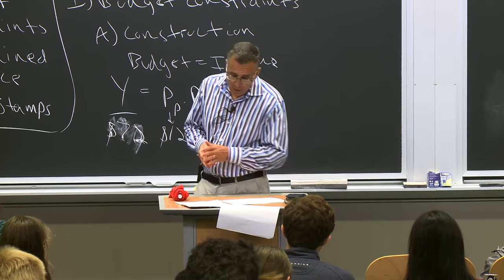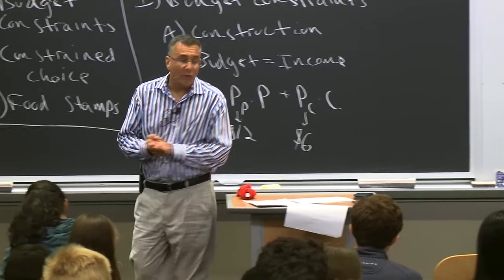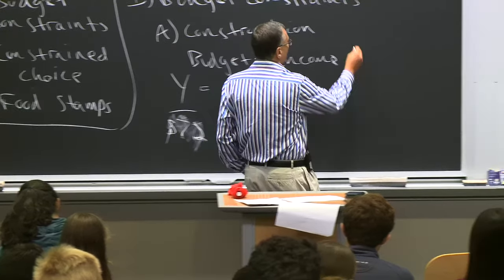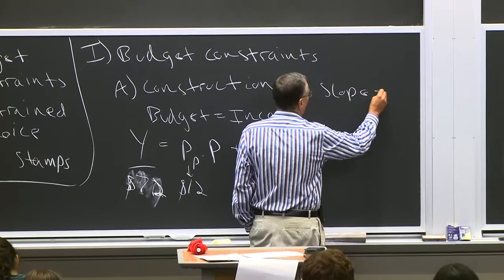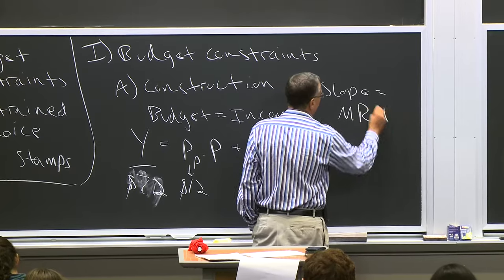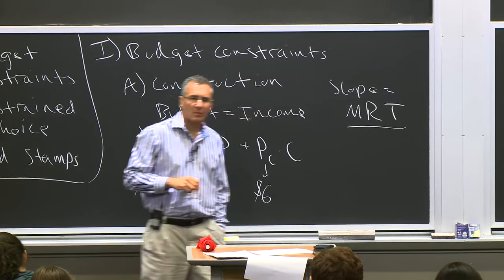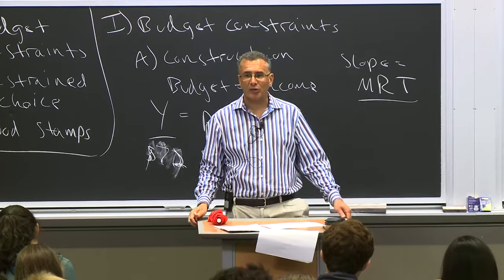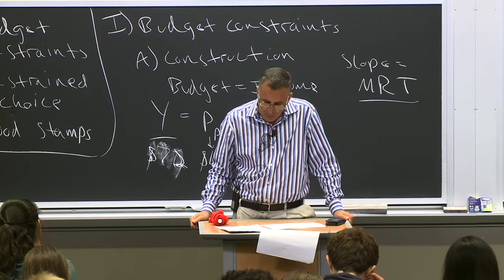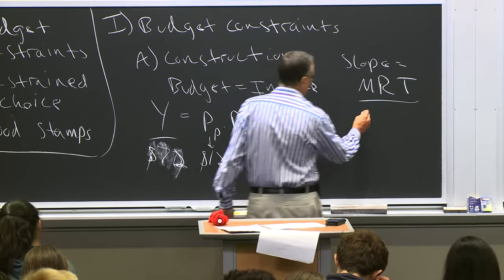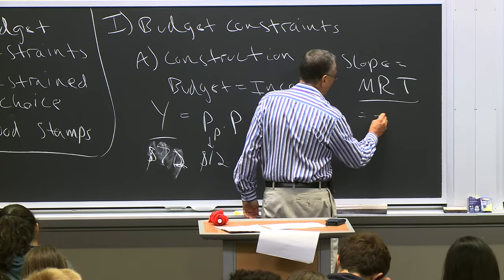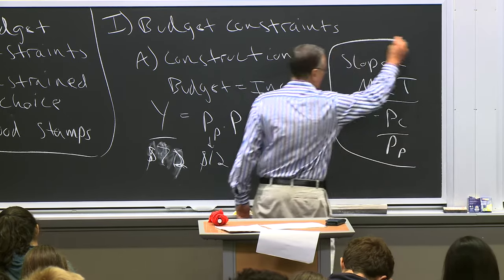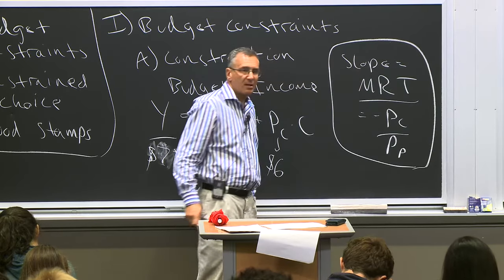We're going to call the slope of the budget constraint the marginal rate of transformation, or MRT. The MRT equals minus P_C over P_P — it's the slope of the budget constraint. Last time we had the MRS, the marginal rate of substitution; now we have the MRT, the marginal rate of transformation.